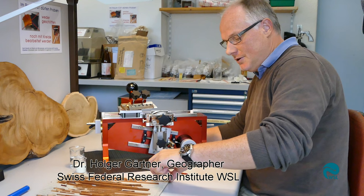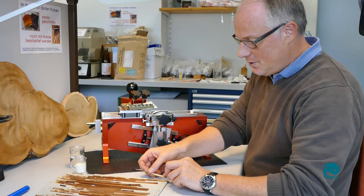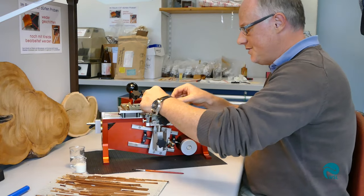In order to cut a micro section from a core sample, you take the sample and fix it in the holder of the microtome.